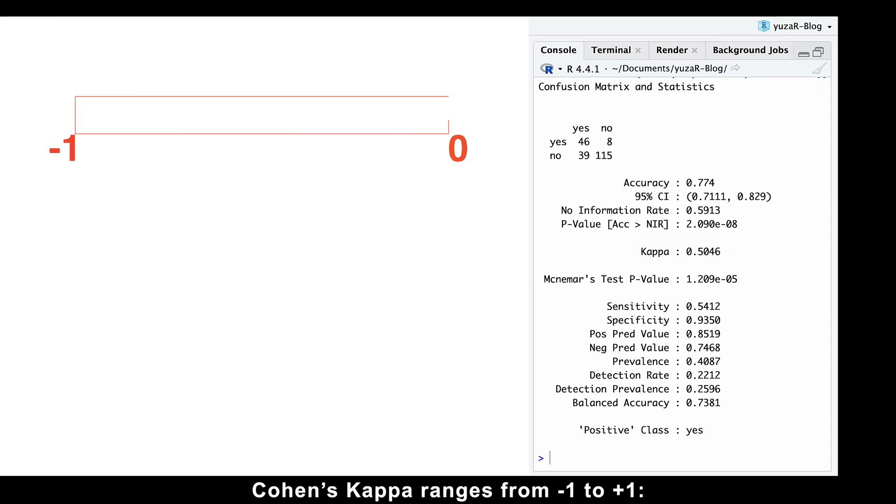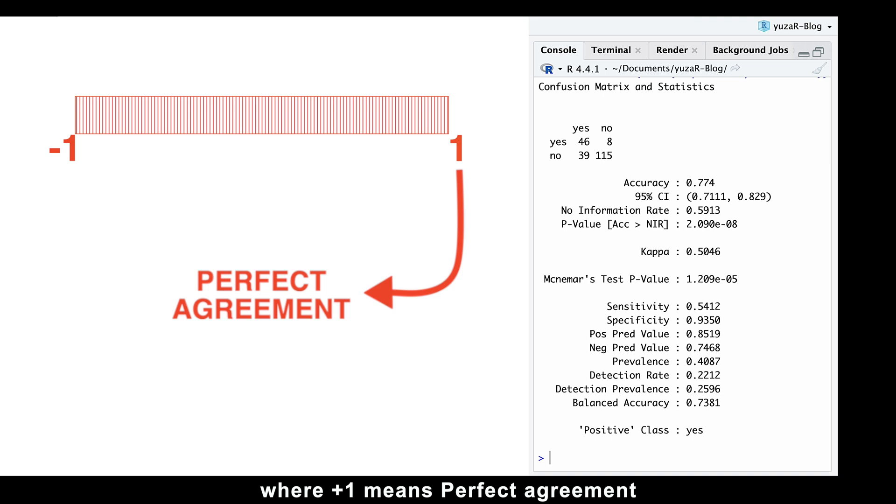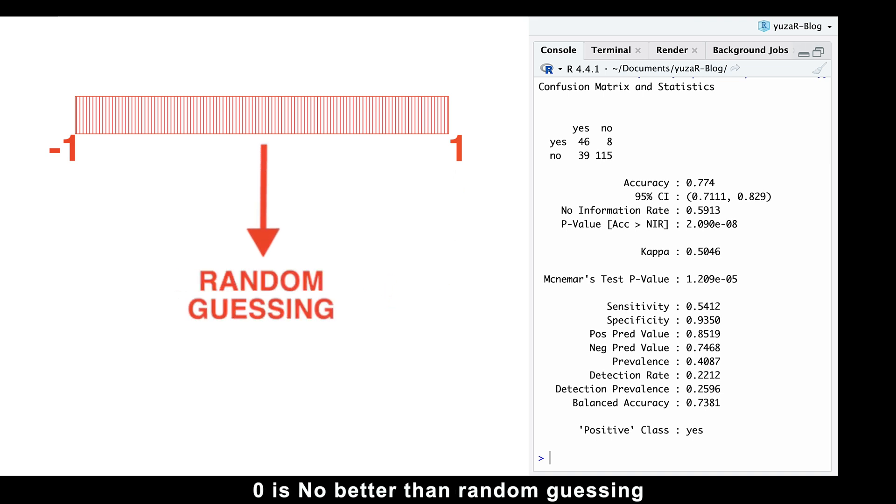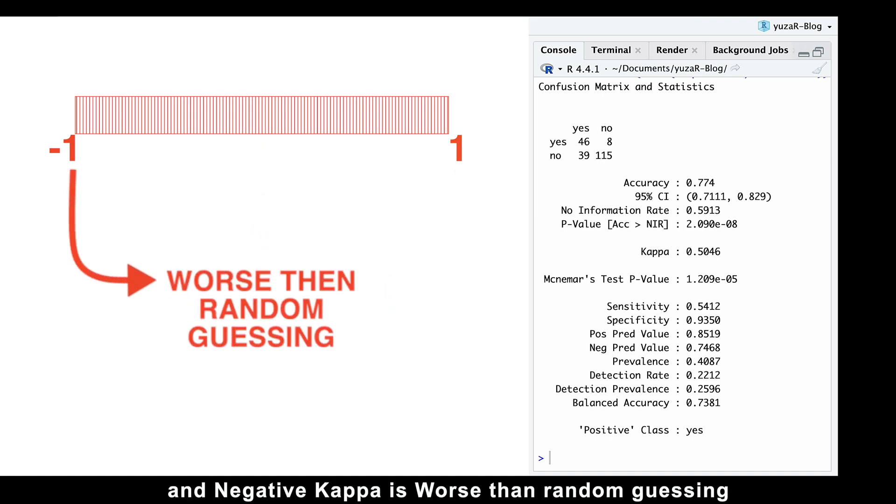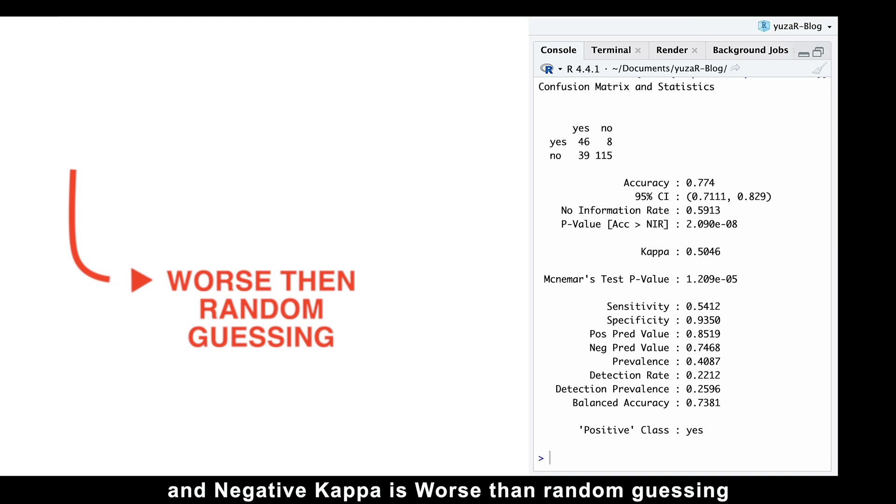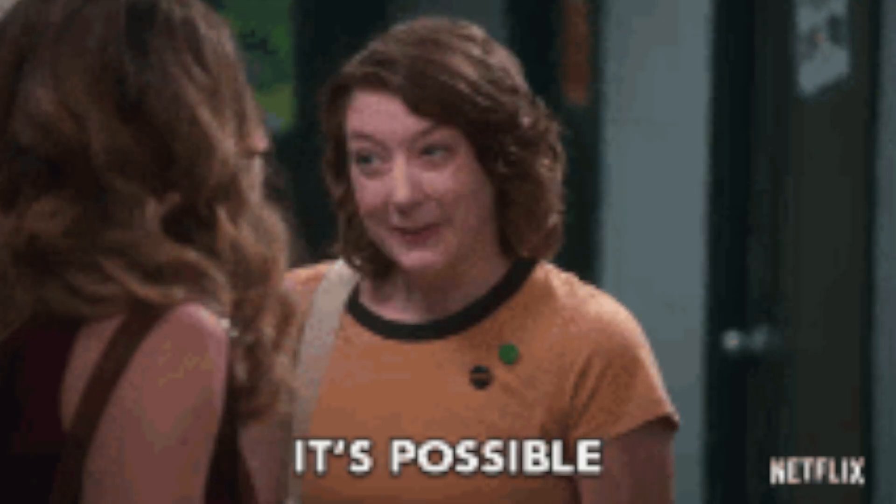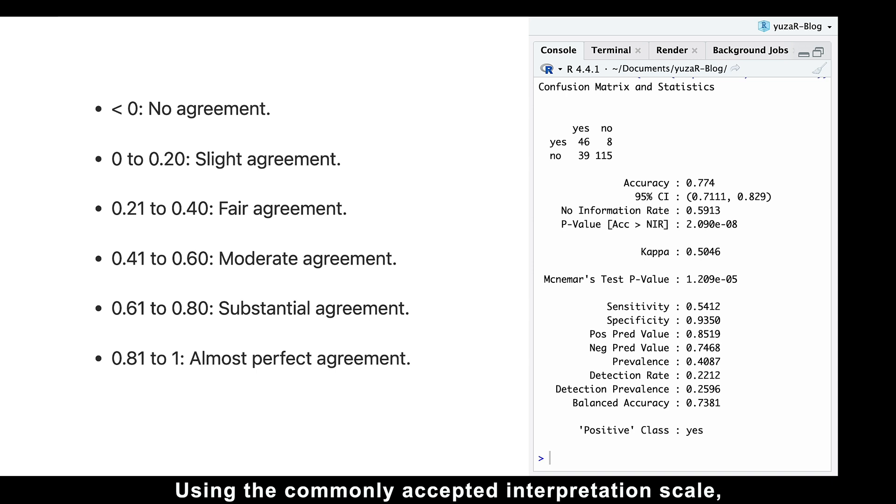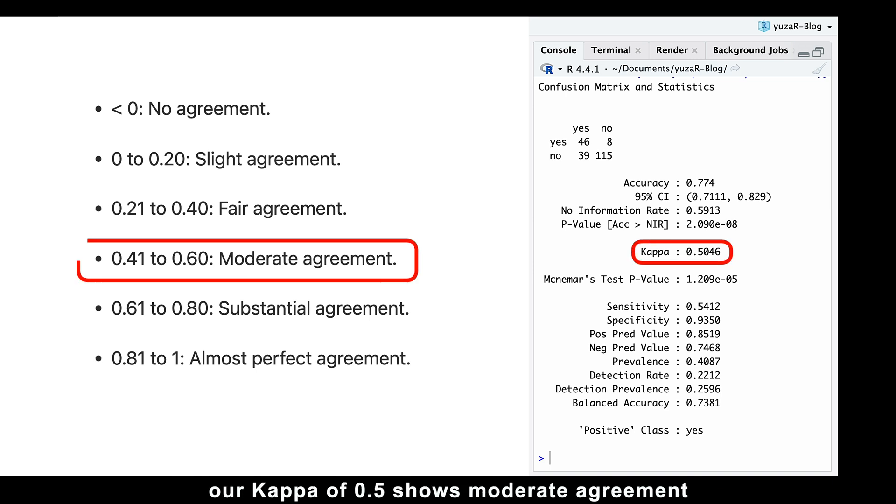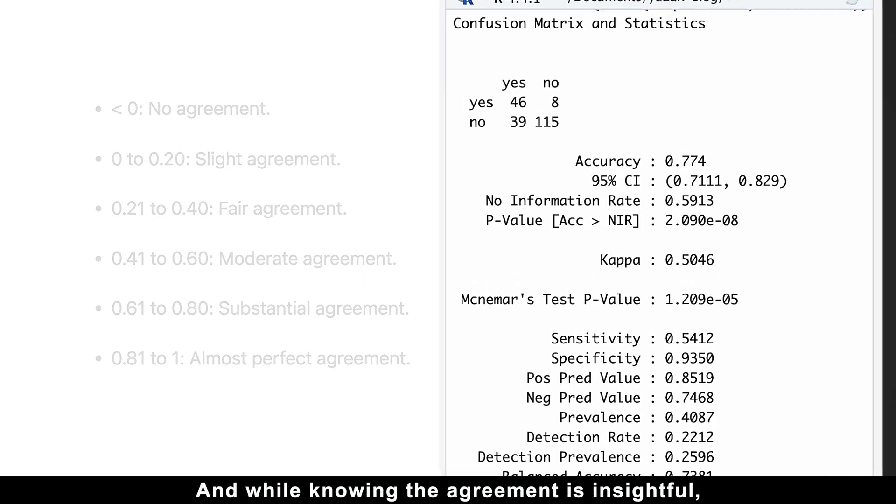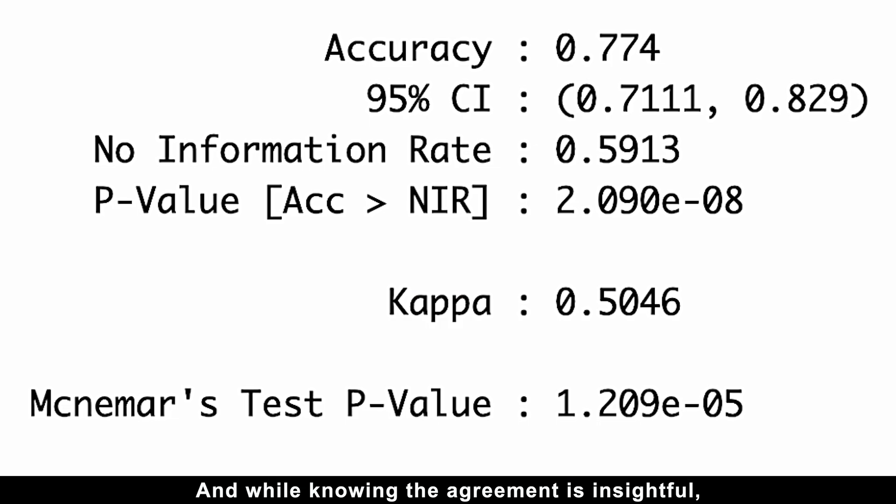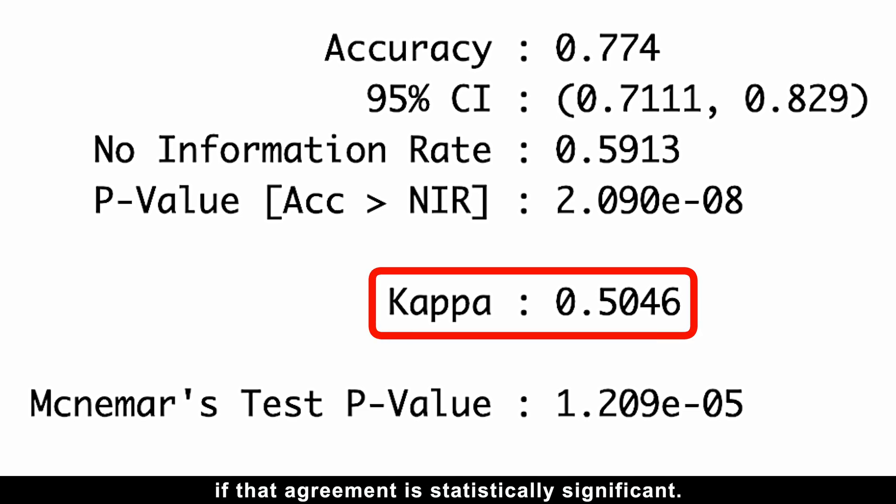Cohen's Kappa ranges from minus 1 to plus 1, where plus 1 means perfect agreement. Zero is no better than random guessing, and negative Kappa is worse than random guessing. Yes, that's possible. Using the commonly accepted interpretation scale, our Kappa of 0.5 shows moderate agreement between the observed and the predicted classifications. And while knowing the agreement is insightful, Kappa alone doesn't tell us if that agreement is statistically significant.